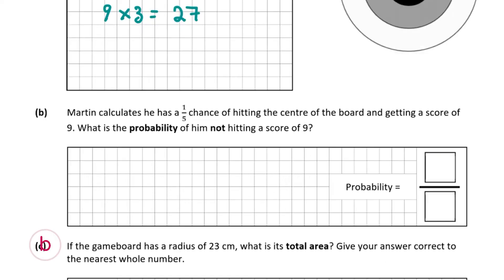Now let's move on to question B. We're told that Martin calculates he has a one-fifth chance of hitting the center of the board and getting a score of 9. What is the probability of him not hitting a score of 9? The probability of him hitting the board is 1.